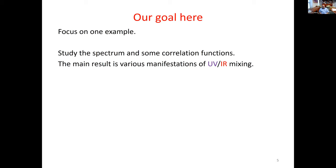Since I have only 35 minutes, I will focus on one example, which is the simplest one but captures some of the subtleties. This will be almost a straightforward analysis using quantum field theory 101, except we will encounter various subtleties along the way. The main result is that there will be very unusual UV-IR mixing — short-distance and long-distance phenomena are mixed together. One of the punchlines: removing the UV cutoff and removing the IR cutoff are two operations that do not commute with each other. This is something I have not seen in standard field theory.